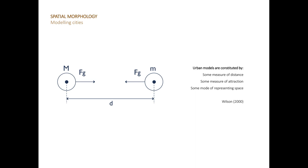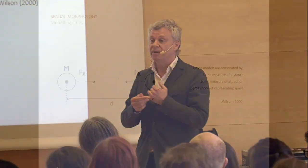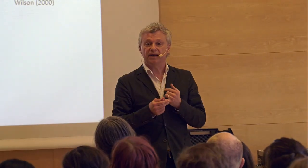One of the leading modelers in the world, Alan Wilson, sets it like this: if you are to create an urban model, you need at least three things. You need some kind of measure of distance, some measure of attraction, and some idea about how to represent space.